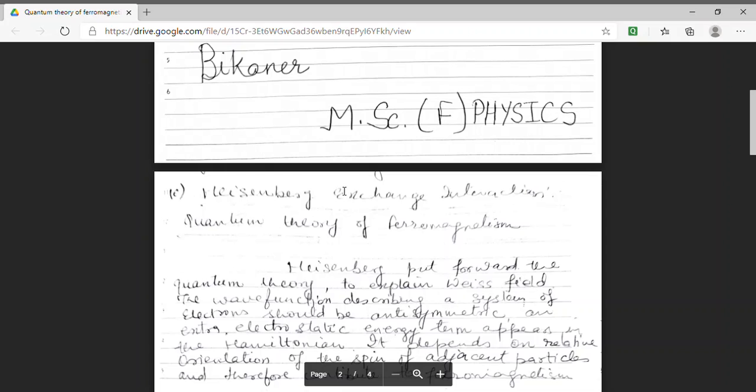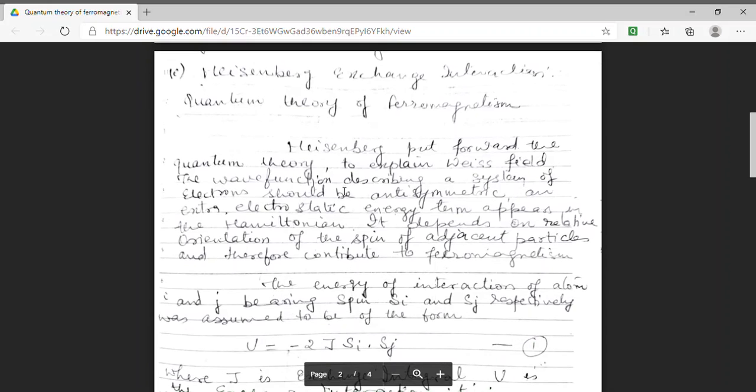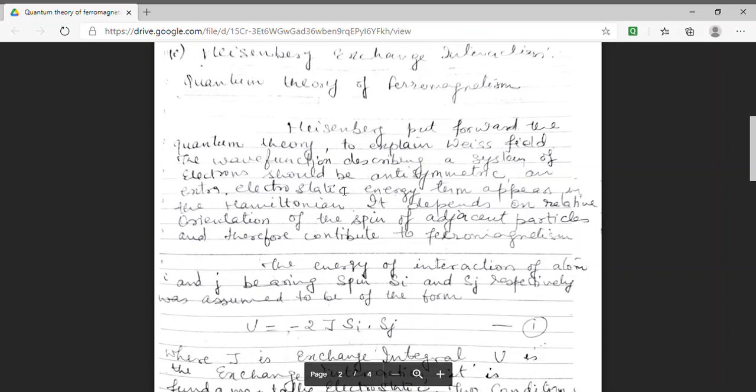Now in today's lecture we will discuss quantum theory of ferromagnetism. That is, we will discuss Heisenberg exchange interaction. Heisenberg put forward the quantum theory which explains the Weissfield theory of ferromagnetism. In this quantum theory it was assumed that there exists a wave function which describes the system of electrons and should be antisymmetric. So if we have a Hamiltonian then an extra energy term will appear. This term will depend on the orientation of spin of neighbor particles.